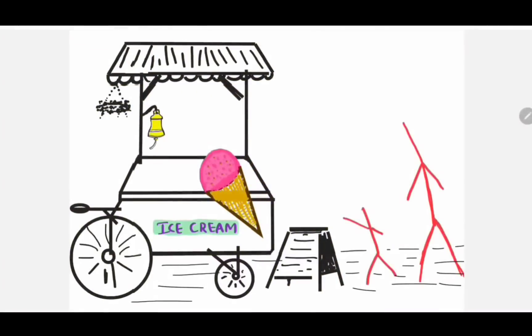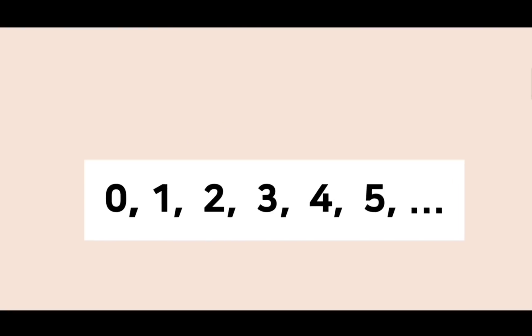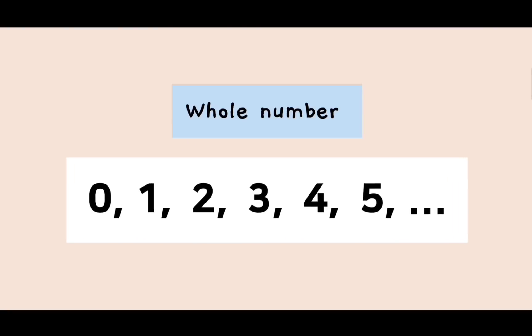But at certain point, father replied, I have no money, nothing. Mathematically, we call this term nothing is zero. Well, the natural number with this additional number zero became whole numbers, and it's denoted by the stylish W.